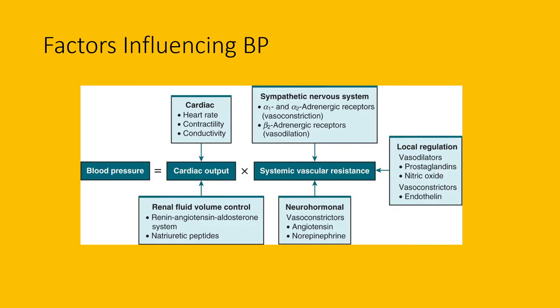Cardiac output involves heart rate, contractility, and conductivity — including the electrical conductivity system. Cardiac output is also heavily related to the renal angiotensin system and whether the kidneys are being properly perfused. Remember: cardiac output is related to the heart and kidneys, while vascular resistance is related to the autonomic nervous system — especially sympathetic activation.